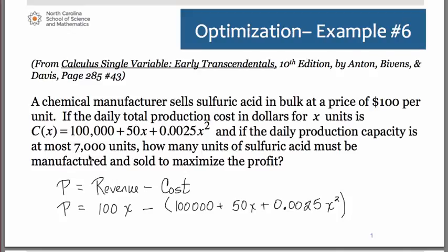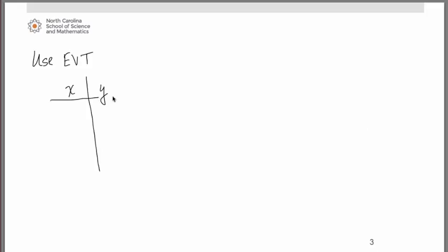We're assuming they're going to make more than 0 units. You can't make a negative number of units. So we could think of the domain of this function as being 0 up to 7,000 because that's the most that this company can handle making in one day. Since we do have a closed interval for our domain, we can easily use the extreme value theorem to determine the location of our maximum. We're going to set up a table of values. We have our domain values 0 and 7,000 and we also want to include our critical number of 10,000.